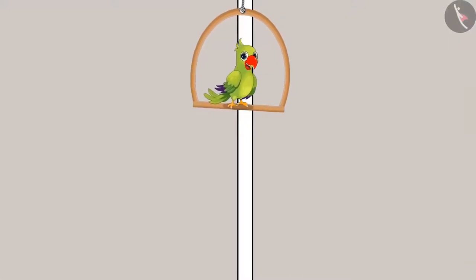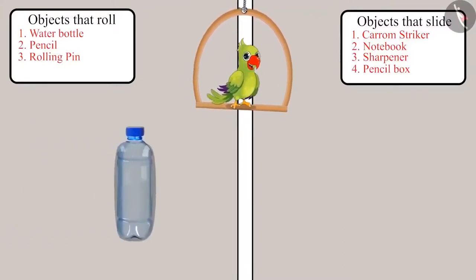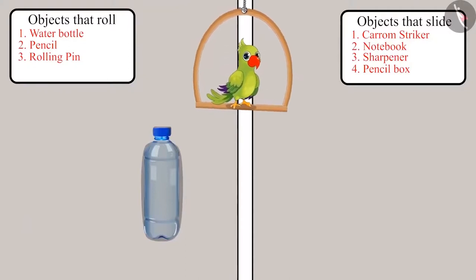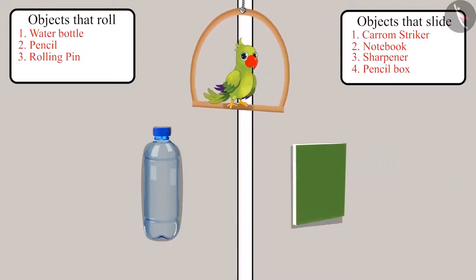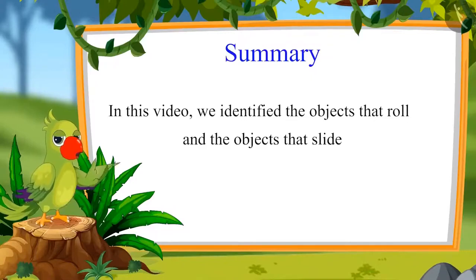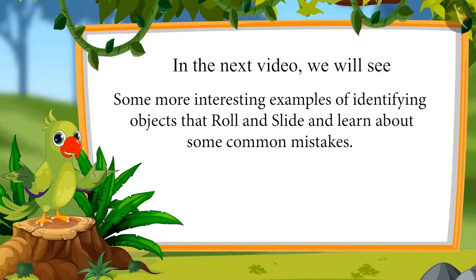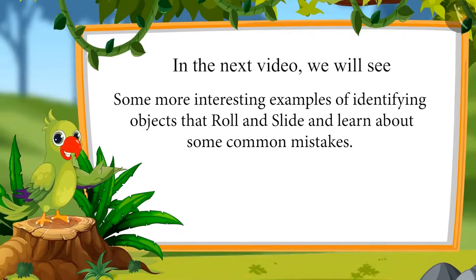So children, you saw that the objects whose surface is circular, they always roll on the floor. And those whose surface is not circular, they always slide on the floor. In this video, we identified the objects that roll and objects that slide. In the next video, we will see some more interesting examples of identifying objects that roll and slide and learn about some common mistakes that should not be made. Bye children.